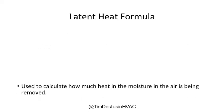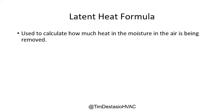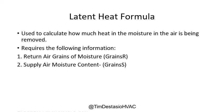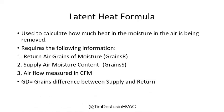With that knowledge, we can talk about the latent heat formula. It's used to calculate how much heat in the moisture of the air is being removed by an air conditioning system. To calculate latent heat, we need the grains of moisture on our return side and our supply side — how many grains before air passes through the evaporator coil, and how many grains after it leaves the evaporator coil. Just like the sensible heat formula, we'll also need to know how many CFMs of air we're moving. GD represents the grains difference between supply and return.